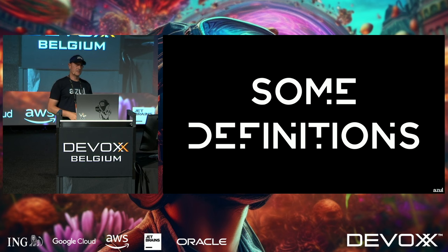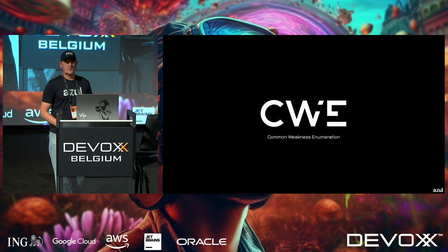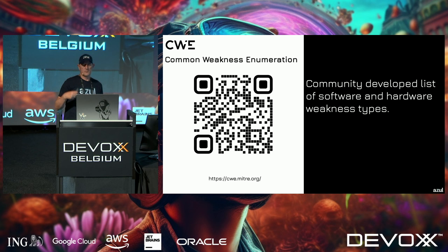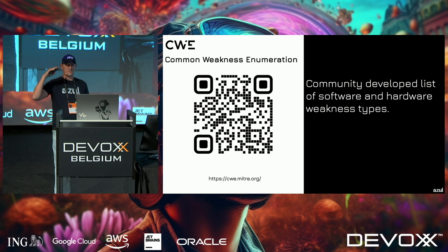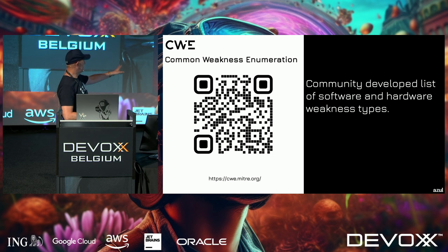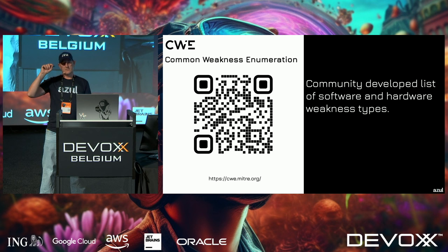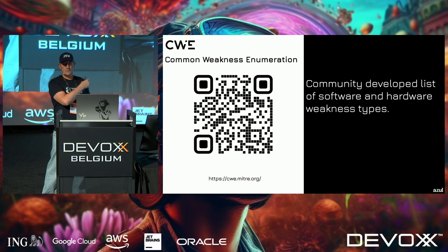After Log4Shell I looked into all these things and stumbled upon so many acronyms. First, CWE — Common Weakness Enumeration — a community-developed list of software and hardware weakness types. It's not from a government, it's from the community, and you'll find QR codes in the presentation to look it up. When you find a CWE, you know where to look it up.